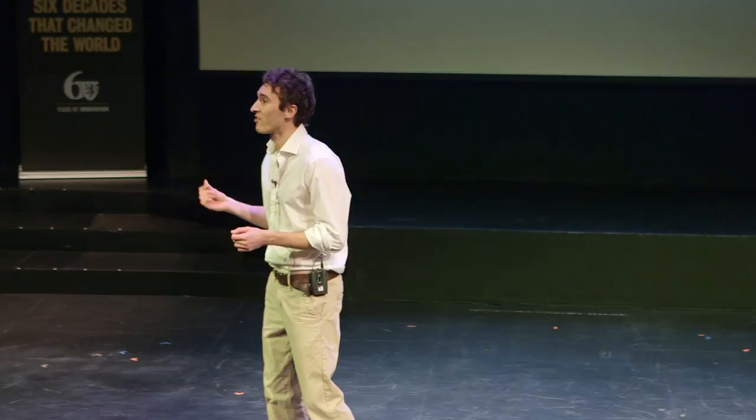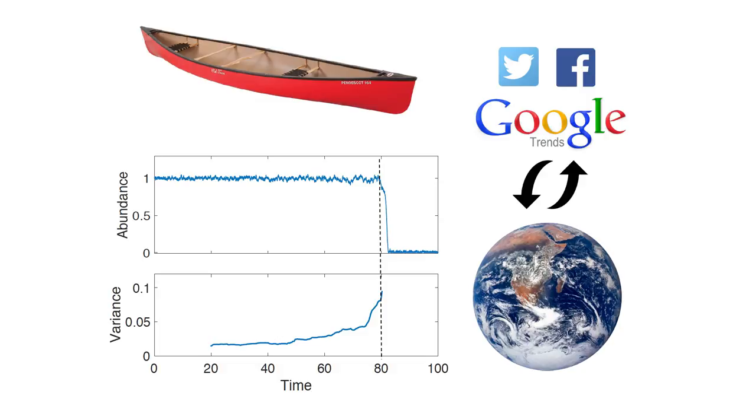So wouldn't it be fantastic if we could anticipate these tipping points before they arrive? My research has been developing mathematical tools that address this significant challenge. One commonly used indicator for an upcoming transition is an increase in variance, as demonstrated by these plots. Variance we can think of as a system's variability about some mean value. As the canoe approaches its tipping point, it becomes more wobbly, more sensitive to small disturbances, and this manifests itself as an increase in variance in our time series, which we can detect.